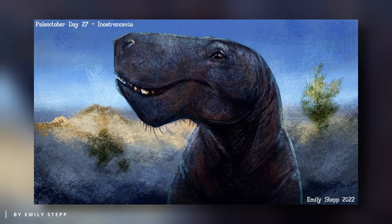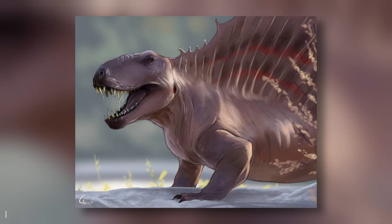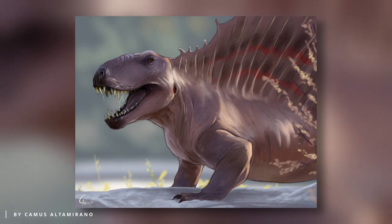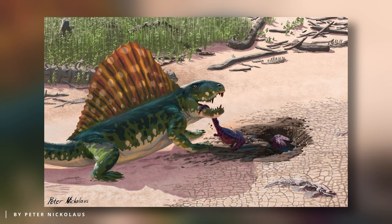Instead, synapsids, which include all mammals including humans, are identified by a single opening in the skull behind their eyes. Initially considered a later lineage of reptiles leading to mammals, synapsids were termed mammal-like reptiles. However, relatively recent studies focusing on differences in their skulls have reshaped our understanding of synapsid origins. All reptiles are now classified within sauropsids, separating synapsids into their own distinct taxonomic group. Consequently, the term mammal-like reptiles has become outdated, and these animals are now referred to as stem mammals or protomammals.